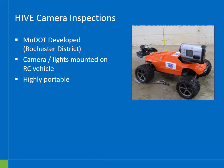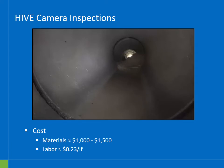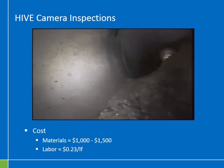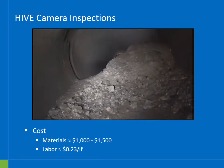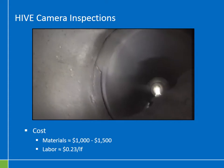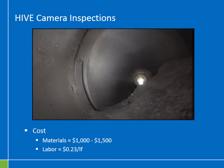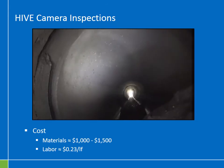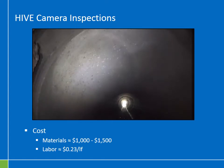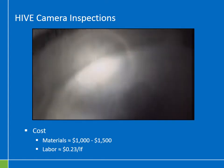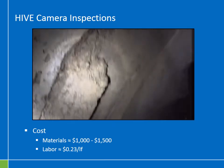HIVE cameras are portable. Unlike many CCTV cameras, you can pick a HIVE camera up, carry it to the site, and deploy it without relying on a large truck needing vehicle access. In this example HIVE camera inspection, the video quality is on par with CCTV. Because the HIVE camera is lighter, the operator is able to use the camera's big tires to drive over debris in the culvert. So even if you haven't given a pipe a pre-inspection to decide if it needed flushing, the HIVE camera's maneuverability allows it to drive over large debris deposits and still get good video inspection.